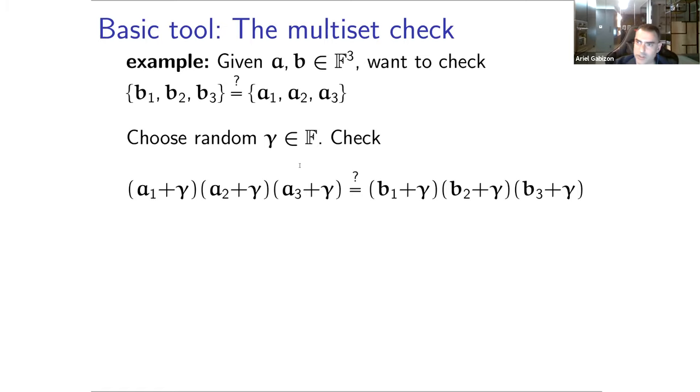A simple idea that was used in previous works, I think various works of Groth, for example this Bayer Groth work that we took inspiration from, is that a simple trick is that you can reduce this multi-set check into a sort of a single randomized product.